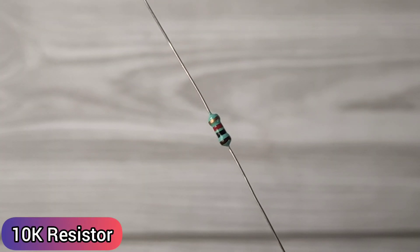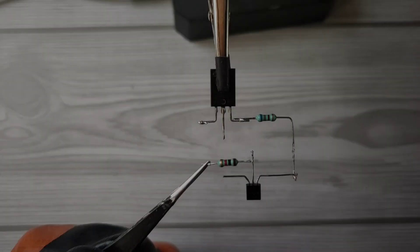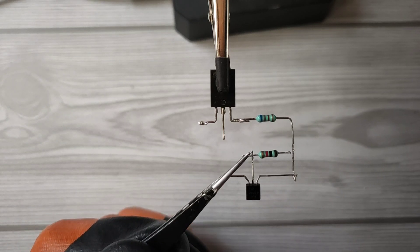Take a 1 kilo ohms resistor and solder between pin 1 and pin 2 of the shunt regulator.